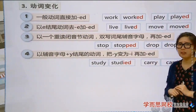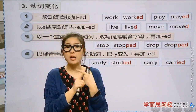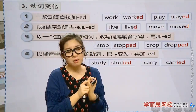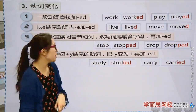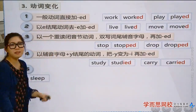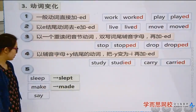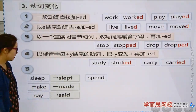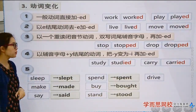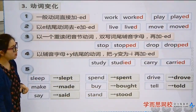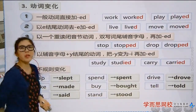Are we done? Not yet! So we have four types — all still connected to '-ed.' But the next group of verbs shows no trace of '-ed' at all. These are irregular verbs: sleep→slept, make→made, say→said, spend→spent, buy→bought, stand→stood, drive→drove, tell→told. We call these irregular changes — and there are many of them.